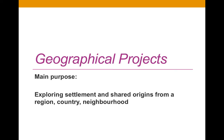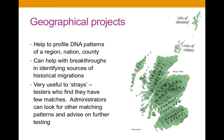Geographical projects are a little bit different. They tend to be very large, as do surname projects. One specific function is that it helps to profile the DNA patterns of a nation, region, or county. This may be useful if you want to find out where a migration began from. Many people are doing DNA because they want to find out where their ancestors came from across the Atlantic. I'm working with somebody at the moment who is looking at a particular pattern that looks Scottish, but the ancestors he knows about are Welsh and from Norfolk — nowhere near Scotland.